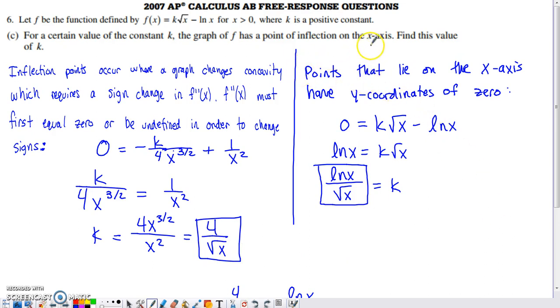The other thing that doesn't really seem that significant, but you definitely have to take into account, is that this point is on the x-axis. If a point's on the x-axis, the y-coordinate of that point is zero. And if the y-coordinate is zero, the function value is zero at that location.